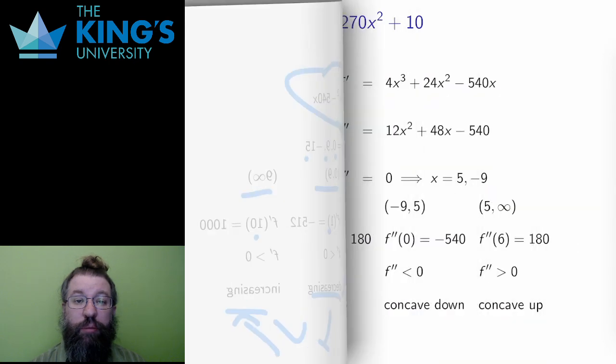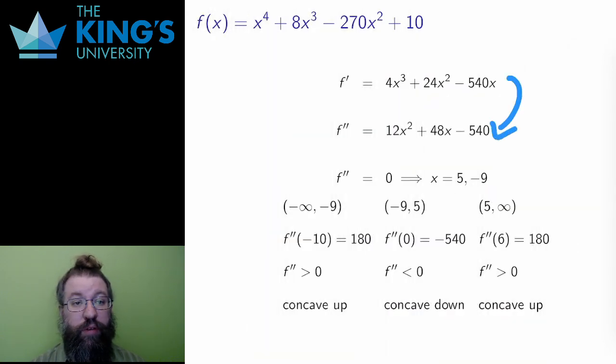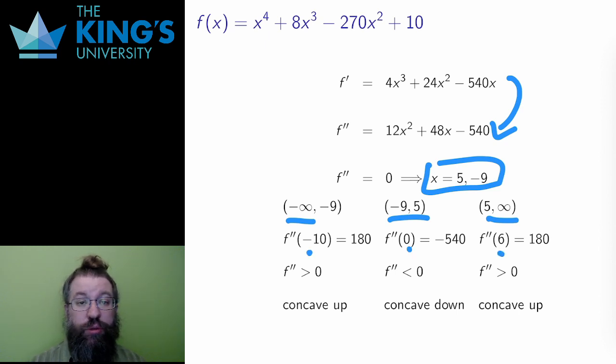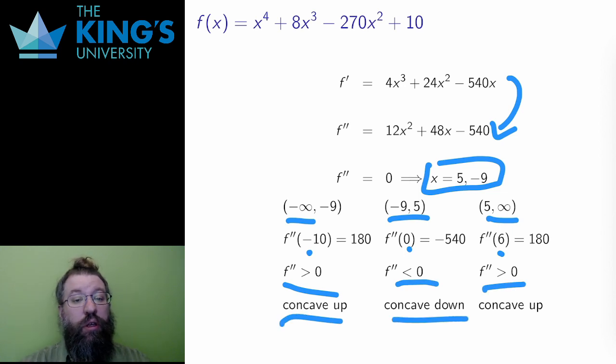Then I do the same for the second derivative. The second derivative is now quadratic, and has roots of 5 and negative 9. This means that the domain splits into three intervals. I test the second derivative at negative 10, 0, and 6. I get results which are positive, negative, and positive. So this is concave up, concave down, and then concave up again. Both points, 5 and negative 9, are inflection points.